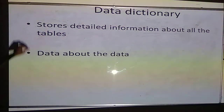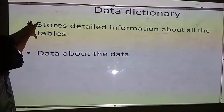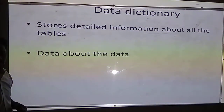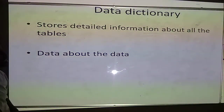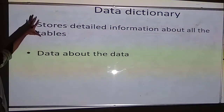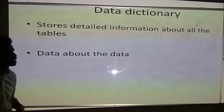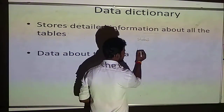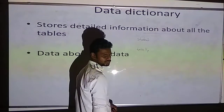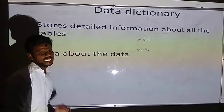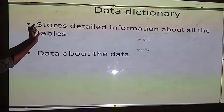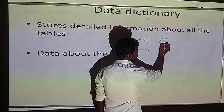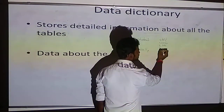Let me discuss data dictionary. Data dictionary stores detailed information about all the tables. In our database, we store details in the format of tables. By using data dictionary, we store the information of all the tables — for example, a student table, faculty table, examination class table, and college table in your university database. It stores the column details: student is having columns like student ID, student name, student address, and student marks.